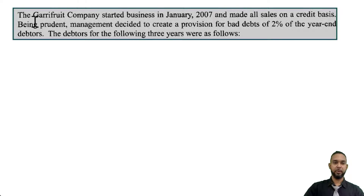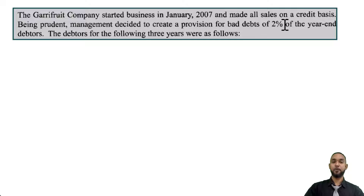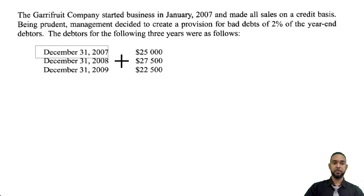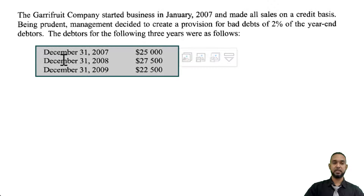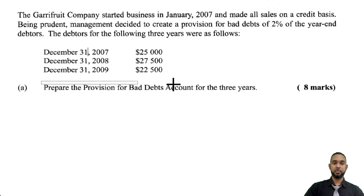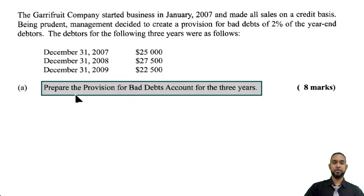So they started by telling us the following. The Garry Fruit Company started business in January 2007 and made all sales on a credit basis. Being prudent, management decided to create a provision for bad debts of 2% of the year-end debtors. The debtors for the following three years were as follows: for 2007, 2008, and 2009 — $25,000, $27,500, and $22,500 respectively. What they want us to do in part A, for 8 marks, is to prepare the provision for bad debts account for the three years.